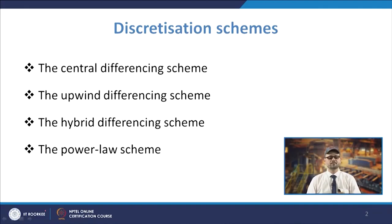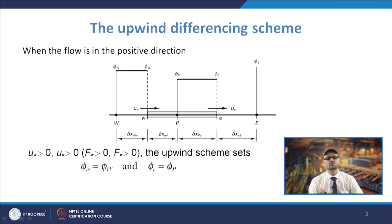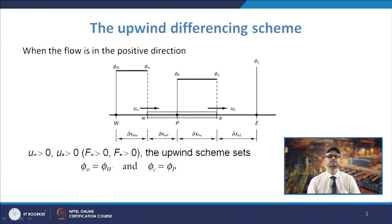The central differencing scheme takes values based on both the east and west nodal values. The next scheme is the upwind differencing scheme, which basically accounts for the flow direction — something the central differencing scheme has the inability to do.